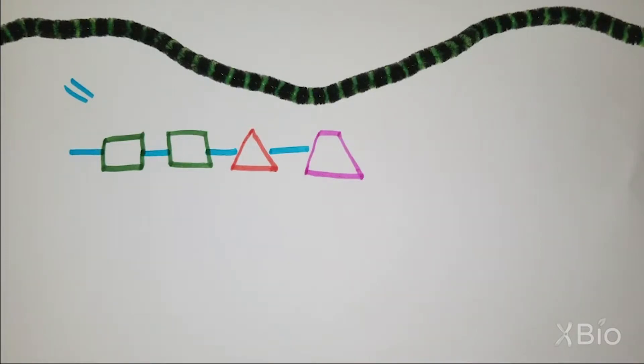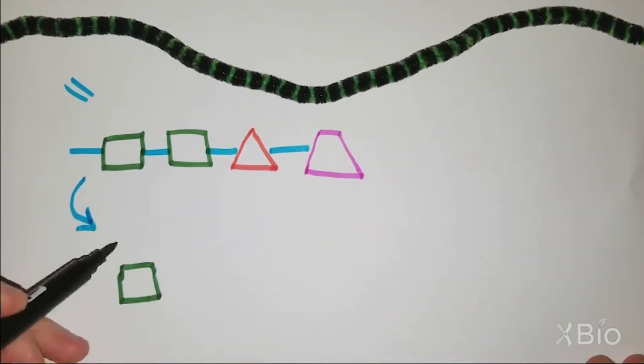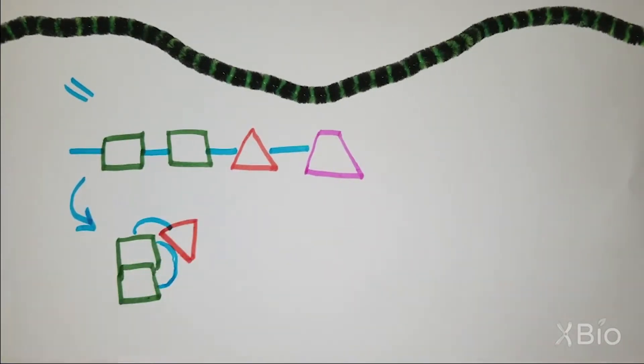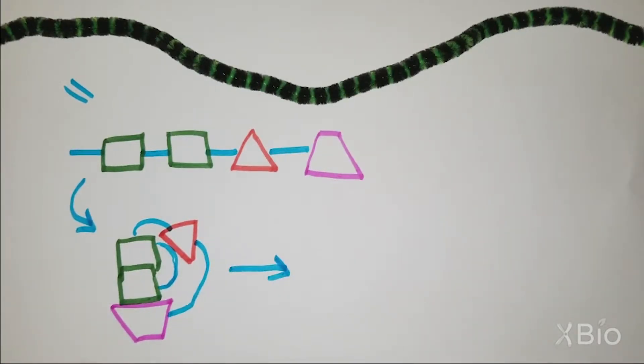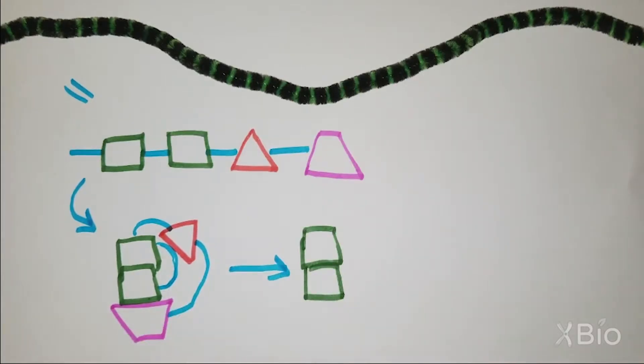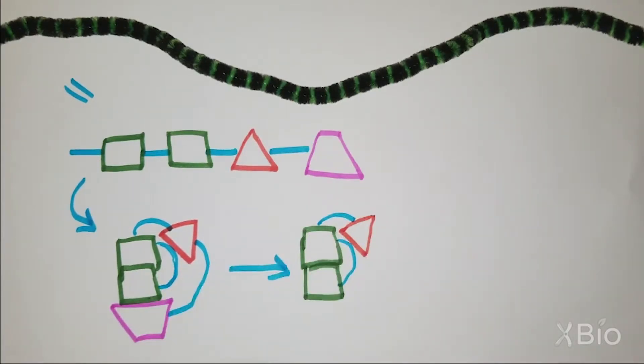Proteins consist of chains of chemical subunits called amino acids, which fold up on each other to make a 3D structure. The amino acids of a protein interact with one another to form a structure with specific shape, and it is that shape which then determines the function of the protein.